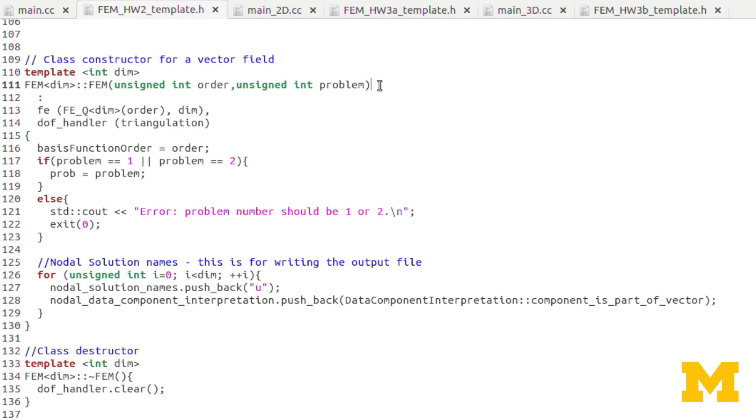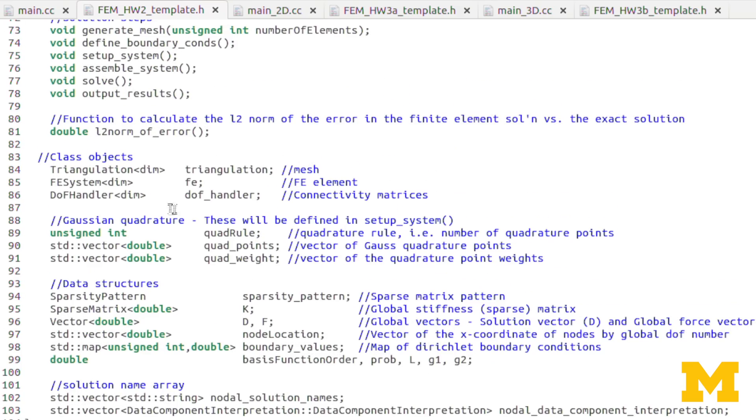The first function we're looking at is the constructor. Remember, the two inputs are an unsigned int called order and an unsigned int called problem. Now, I actually have something going on here between this declaration of the function name and its inputs and the curly brace. This is so that we can call the constructor of some of these data objects that were declared earlier as class objects.